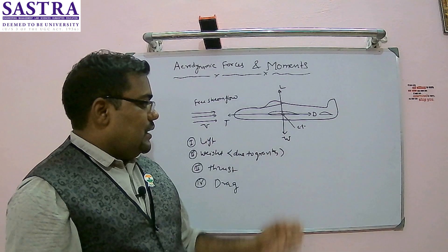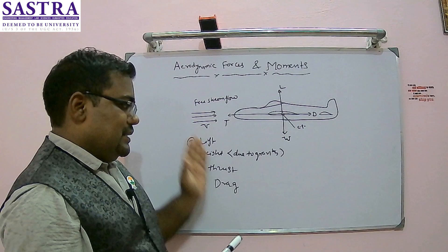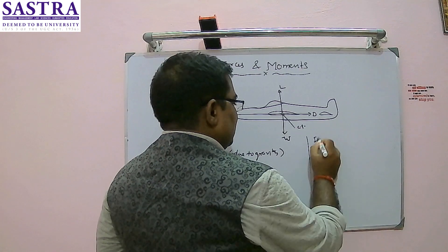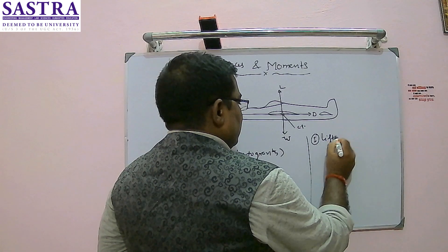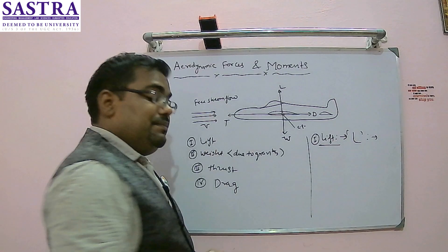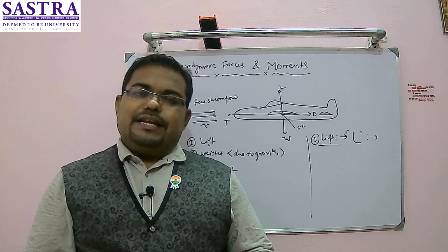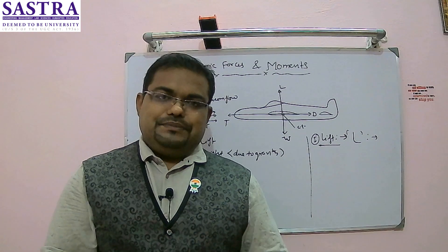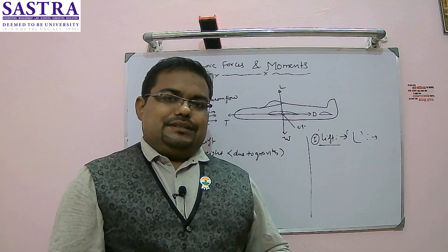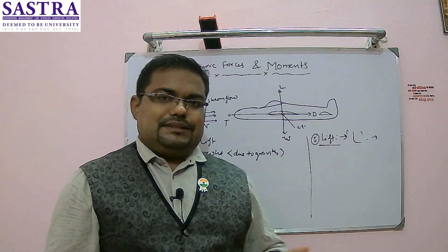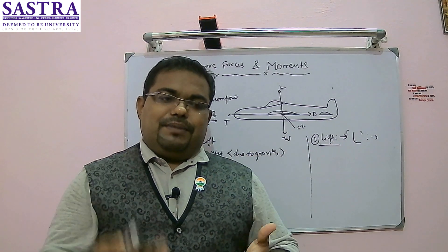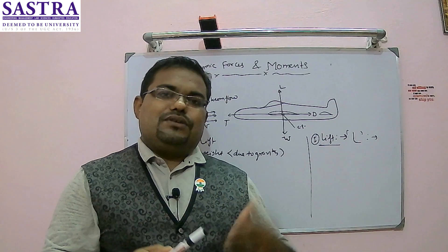Now we will define each of these basic forces one by one, starting with lift. Lift is denoted by L. Lift is the aerodynamic force created by the aircraft when flying through the air. As a result of pressure forces and skin friction forces and the pressure difference, we get the net resultant force acting over the aircraft. One component of that net resultant aerodynamic force is called lift.